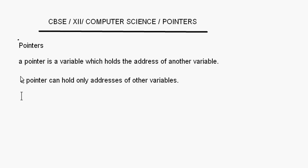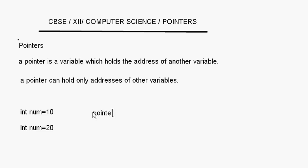Let us first compare pointers with a normal variable. Supposing I have a variable which is int num, I can store any value inside this num — it can be int num = 10 or int num = 20, whatever you want you can store. Now, supposing I have a pointer variable, inside that pointer variable you cannot store values like numerical values or anything like this — this is wrong.